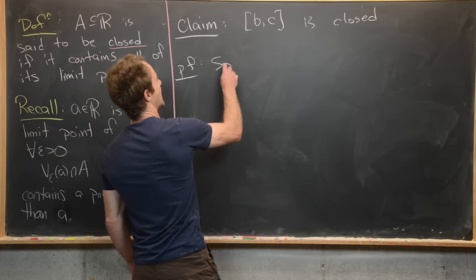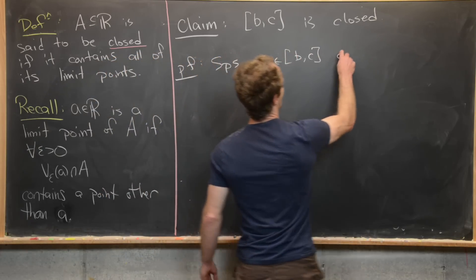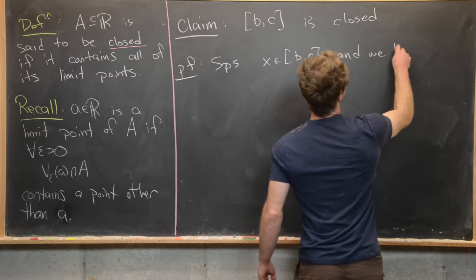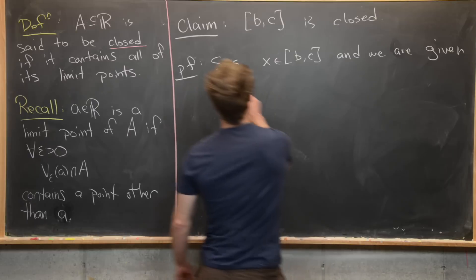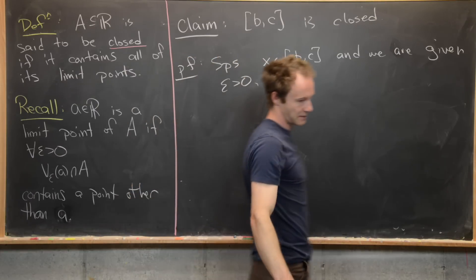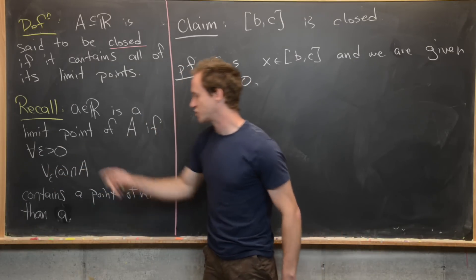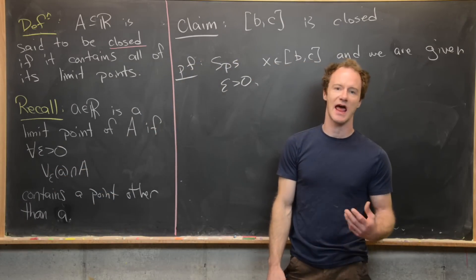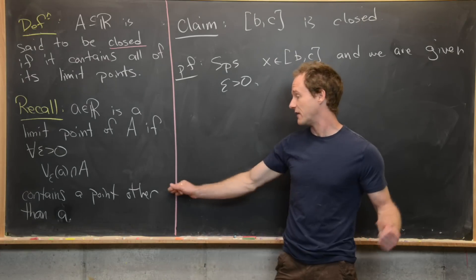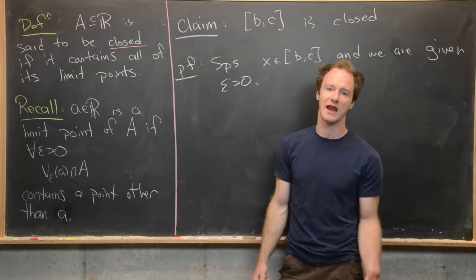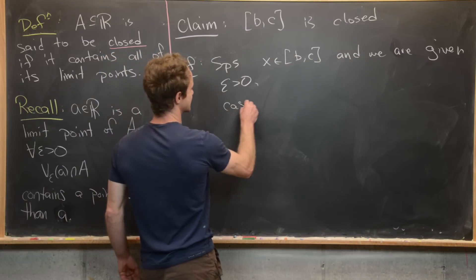Suppose we have an element X from the closed interval [B,C] and we are given some epsilon greater than zero. What we want to show is that the epsilon neighborhood centered at X intersected with [B,C] is non-empty and in fact contains a point other than X itself. We'll do this in three cases.